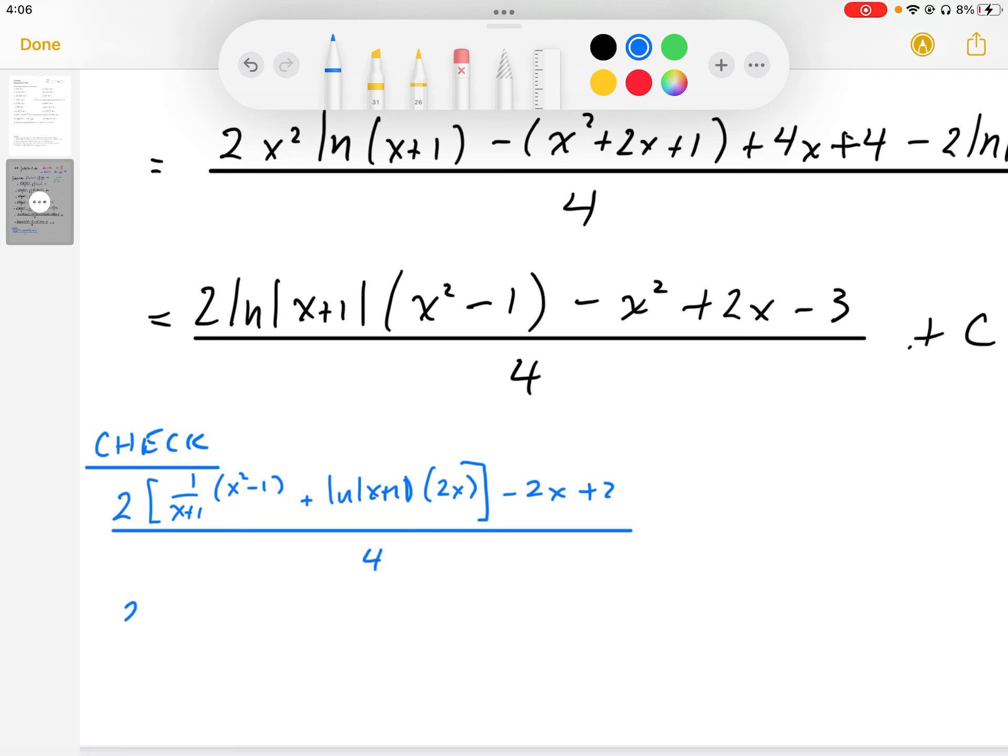So looking at the numerator here, the x squared plus 1 cancels with x plus 1 in the denominator. So I end up with x minus 1 plus 2x log of x plus 1, and then minus 2x plus 2, and that's all over 4.